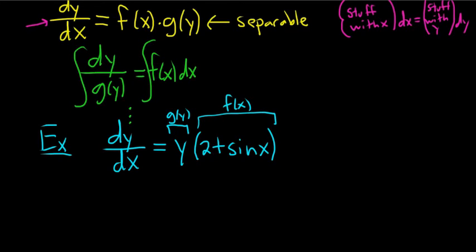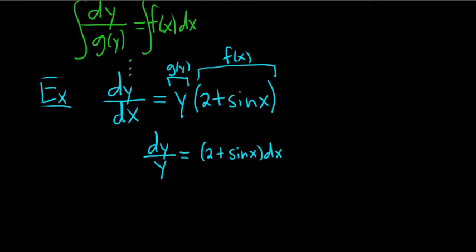So it's easy to separate. We'll start maybe by dividing by y and multiplying by dx. When we do that, that gives us dy over y, dividing by y, and multiplying by dx gives us 2 plus sine x dx. Okay, so now we're in a good place. We have a pure function of y and dy equal to a pure function of x dx.